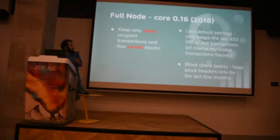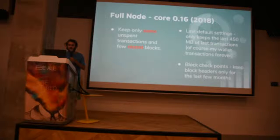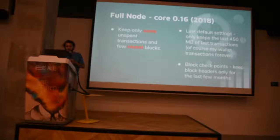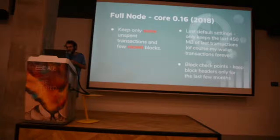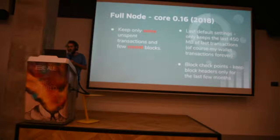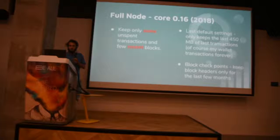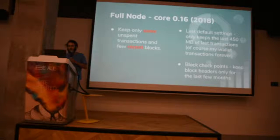If you are talking about Core 0.16, which is the full node's last version, it does not keep all the unspent transactions. It only keeps about 400 megabytes of recent transactions and only keeps a few recent blocks. Just to be able to handle more, it still verifies everything going on the network. It can still be used by miners and wallet providers that have to handle the whole network. The main utility is the block checkpoint — you take an old block and keep the blockchain from that point onwards, without keeping the old blocks.